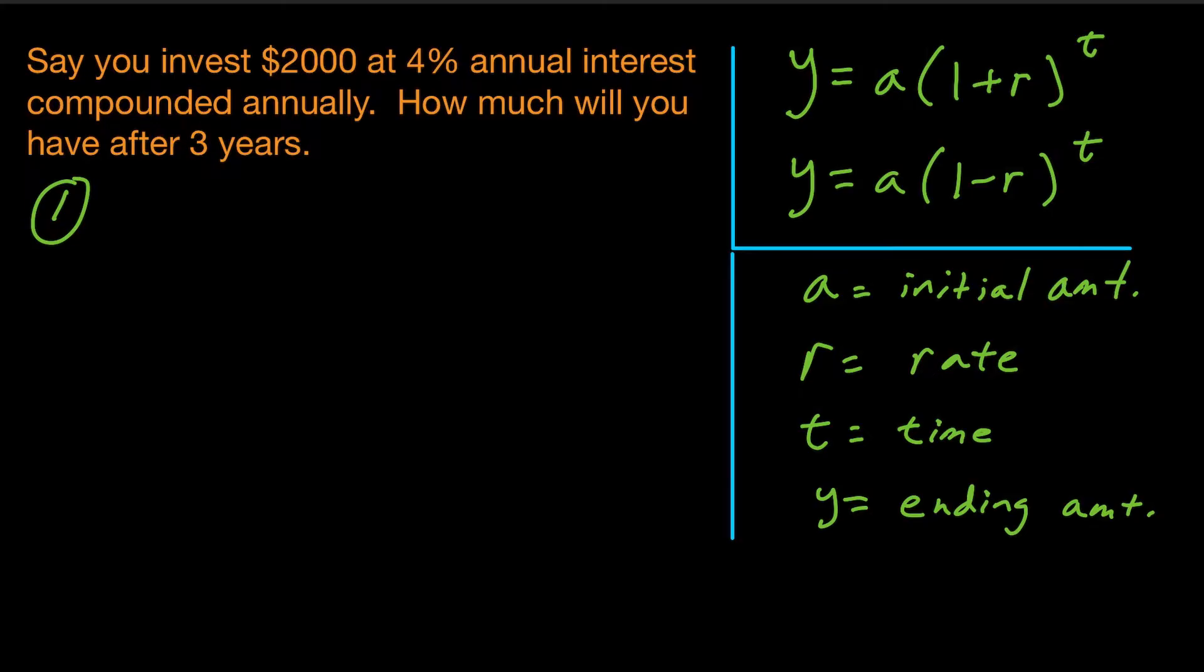So the first example, what we're looking at here is, say you invest $2,000 at 4% annual interest, and it's compounded annually, so just once per year, how much will you have after three years? So because this is a growth problem, we're going to use that top equation, y equals a times 1 plus r to the t.